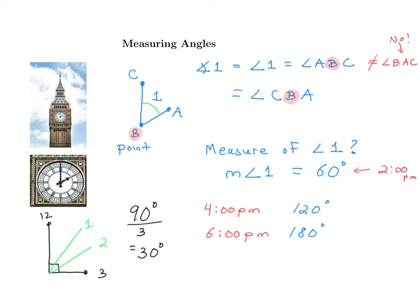What about 7pm? The minute hand is at 12 and the hour hand is at 7. Is the answer 30 more from 180, which is 210? It turns out the answer is no. We're not going to use the larger of the two angles — the one that goes past a straight line. The convention we will use is to use the smaller of the two angles between the two hands, so our answer will always be less than 180. Counting back from 12 toward 7 gives 30, 60, 90, 120, 150 degrees.